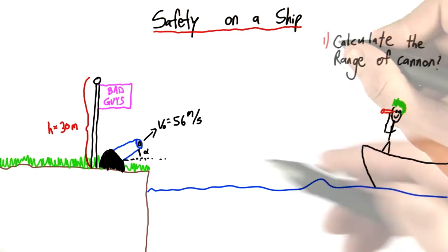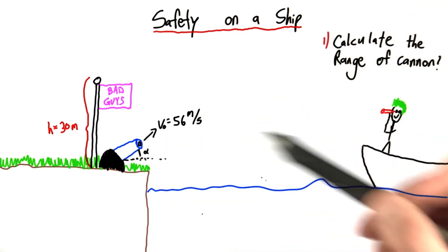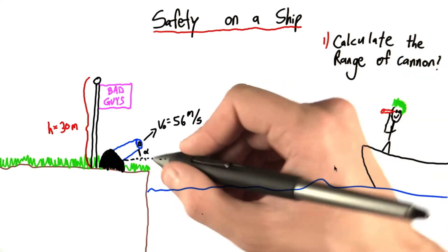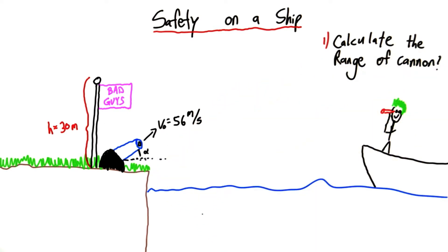So what do we need to do? Well, first we need to calculate the range of the cannon to figure out how far this thing can shoot. And as a hint, range is optimized when this angle is equal to 45 degrees.